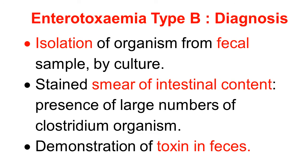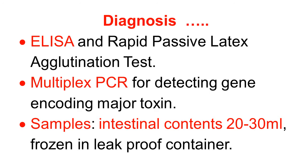It is difficult to differentiate which type it is. In more sophisticated laboratories, demonstration of exotoxin of Clostridium perfringens in the faeces can be done. Sophisticated tests such as ELISA and Rapid Passive Latex Agglutination Test, and Multiplex PCR for detecting the gene encoding major toxin — these are sophisticated tests but they will confirm the disease.